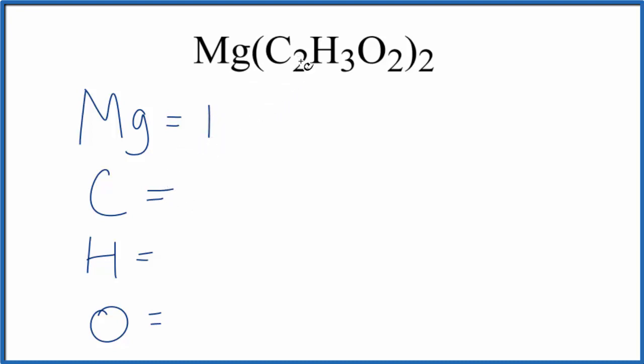For the carbon, there's two, but this two, everything in these parentheses is multiplied by the subscript outside. So it's two times two. So we have four carbon atoms.